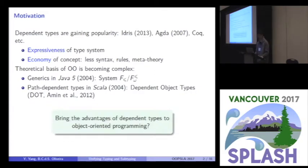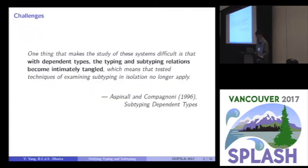So here is the research problem. Can we bring the benefits of dependent types to the scene of object-oriented programming? And especially in our work, we focus on the second benefit, the economy of concept. To model object-oriented programming, we often need the subtyping relation.